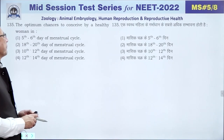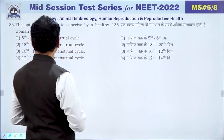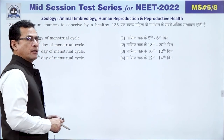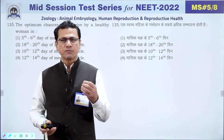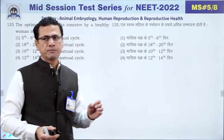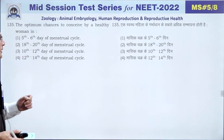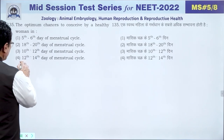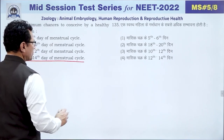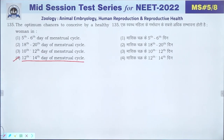Question 135: The optimum chances to conceive are when ovulation occurs. Ovulation happens between days 12–14 of the menstrual cycle, so fertilization chances are maximum at that time. The answer is 4 — between 12 to 14 days of the menstrual cycle.